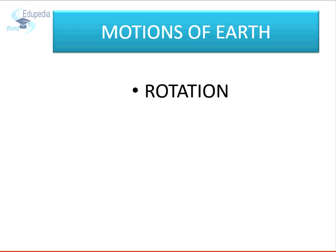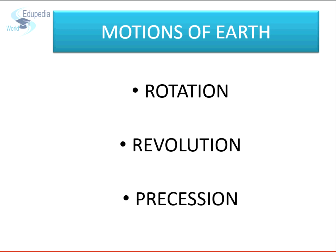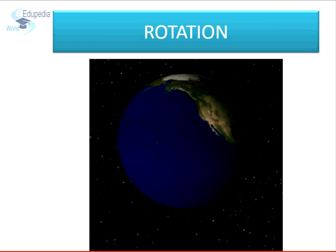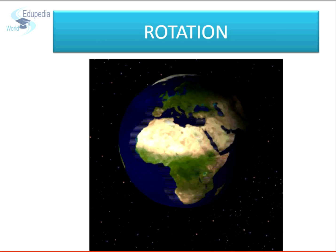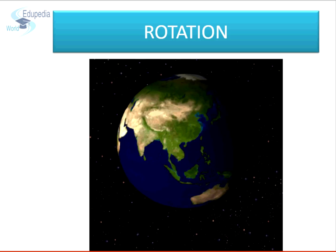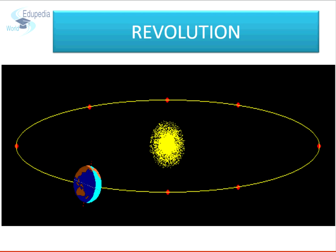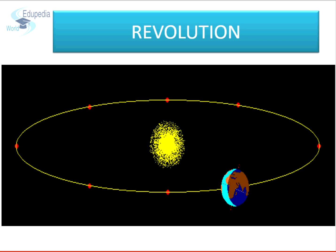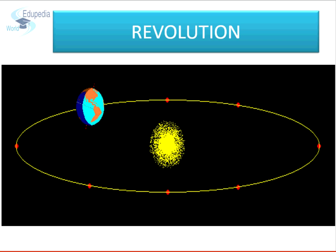The motions of our earth are rotation, revolution, and precession. The earth spins on its imaginary axis from west to east — this motion is known as rotation. Earth takes 24 hours to complete one rotation. The earth also moves around the sun along a fixed path known as an orbit — this motion is known as revolution. The earth takes 365 days and 6 hours to complete one revolution around the sun.